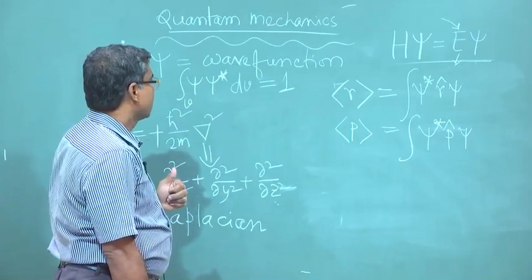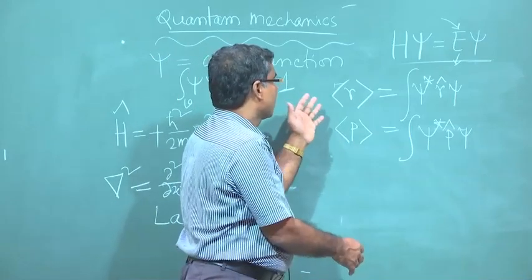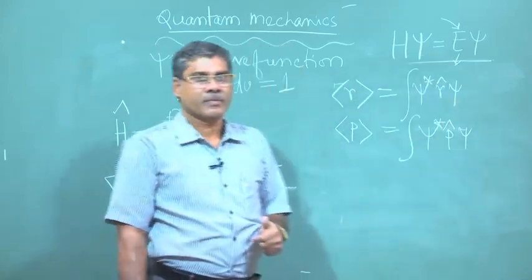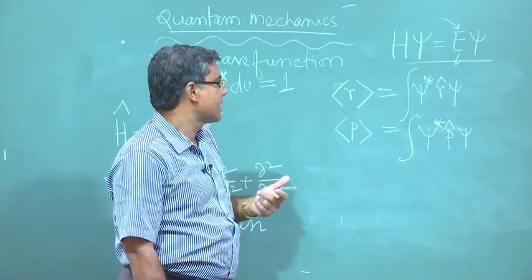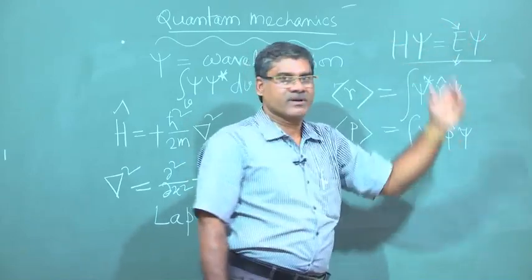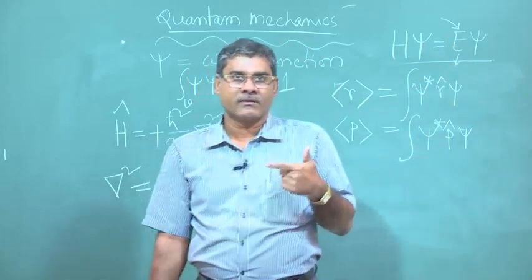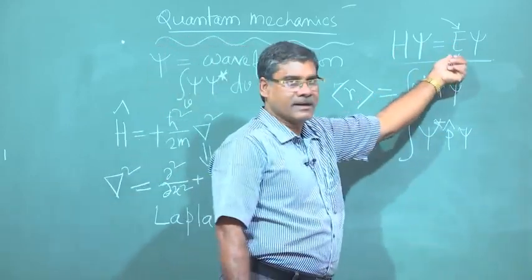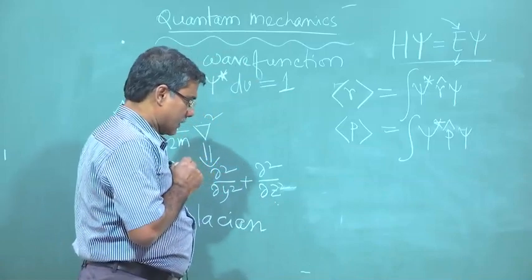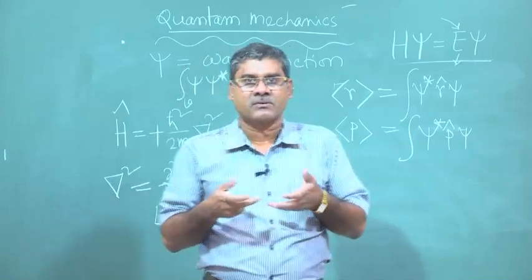That is how one can find out the average value or expectation value of an observable parameter. The difference is that in the case of an Eigen function, if the wave function satisfies the wave equation, then the energy or observable is definite — it is not an average energy, it is the exact energy.